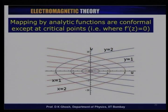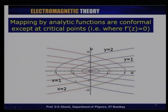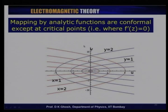In the w-plane under z², the blue-colored curves (y = constant, imaginary part constant) correspond to lines of force, while the red curves (x = constant, real part constant) correspond to equipotentials. Lines of force and equipotentials remain perpendicular to each other in the mapped plane.